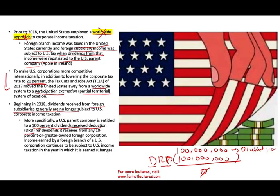Additionally, the government gave companies a window to repatriate money that was already sitting overseas prior to 2018 — essentially old accumulated earnings treated as deemed dividends — with a one-time tax break if they brought that money home. We'll discuss this further in a separate topic. This transition deal was specifically for money accumulated before 2018.